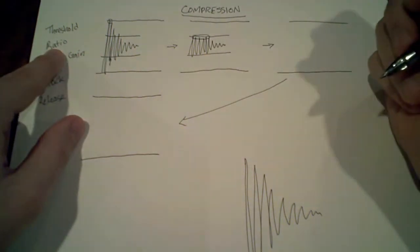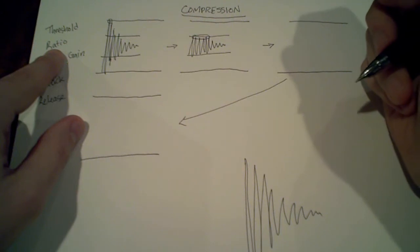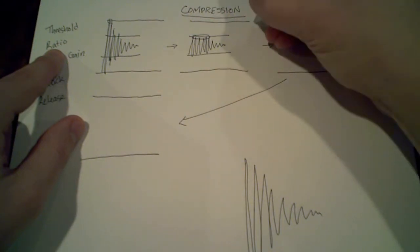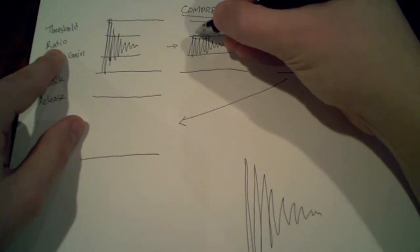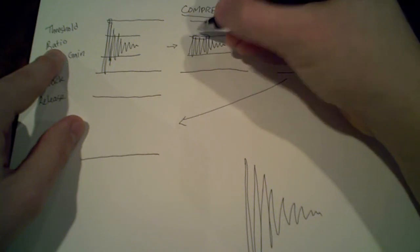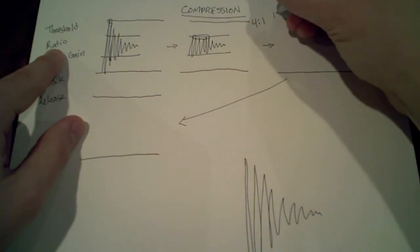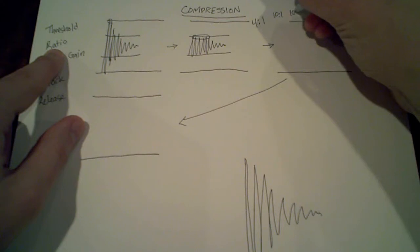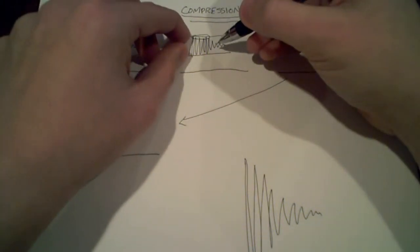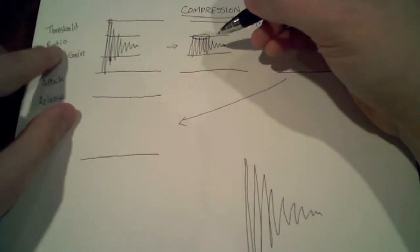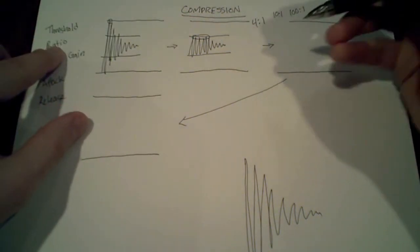With ratio, this is how much compression takes place outside of the threshold. So at a 4-to-1 ratio, for every 4 decibels that you go outside of the threshold, it's only going to show 1. At a 10-to-1 or 100-to-1 ratio, you'd be squashing down the signal so much that it would completely distort it — so you don't want to go to numbers that high.